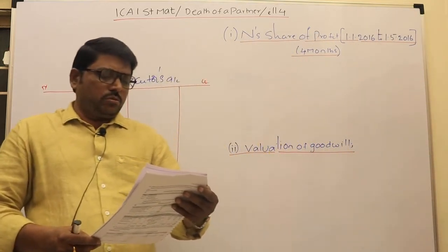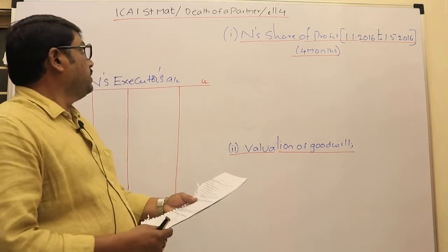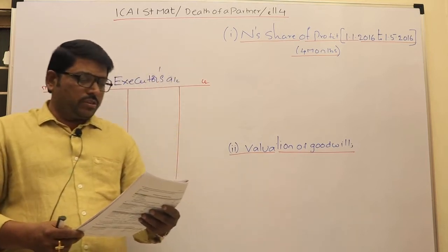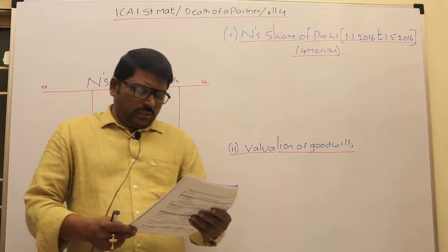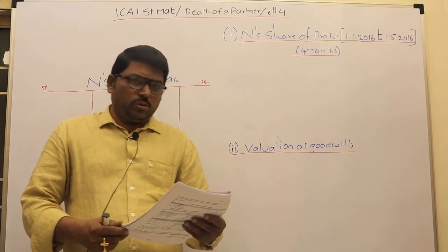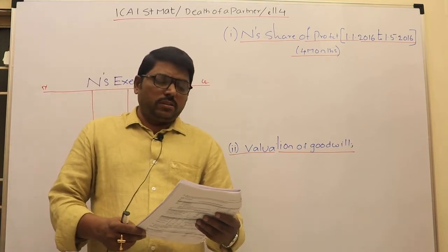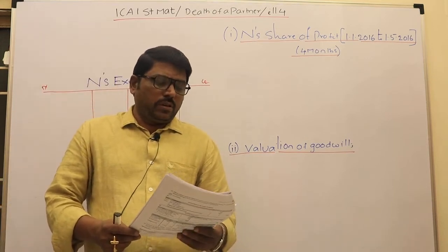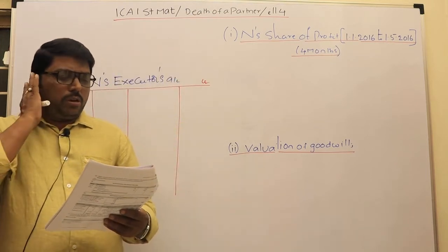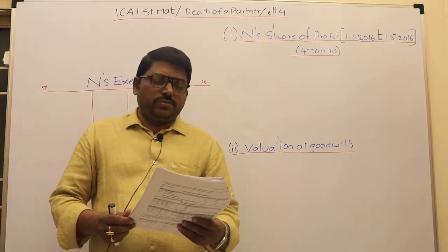Hi friends, today we are going to discuss again from the ICAI study material — Death of a Partner, Illustration 4. It is a very simple and easy problem. B and N were partners in a partnership firm, and according to the partnership deed the account books are to be closed on December 31st each year.